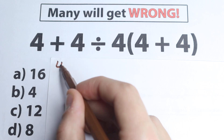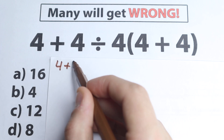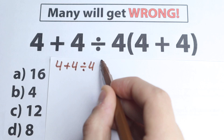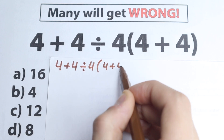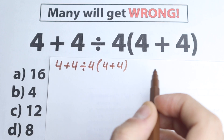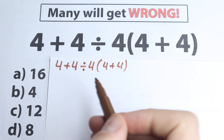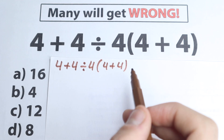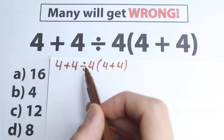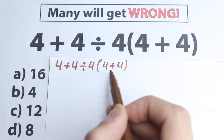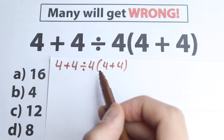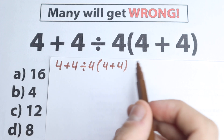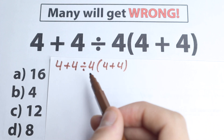So let's try to solve it. We have 4 plus 4 divided by 4, and times 4 plus 4. The main question here is to find the correct order to do this problem, because we have addition, division, addition again, and multiplication — a lot of combinations. The key question is: what do we need to start with?